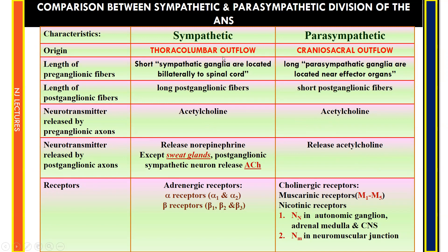Receptors of the sympathetic nervous system are adrenergic receptors, consisting of alpha receptors (alpha-1 and alpha-2) and beta receptors (beta-1, beta-2, and beta-3). Receptors of the parasympathetic nervous system are cholinergic receptors — muscarinic receptors M1 to M5, and nicotinic receptors: Nn located in autonomic ganglia, adrenal medulla, and CNS, and Nm located at the neuromuscular junction.